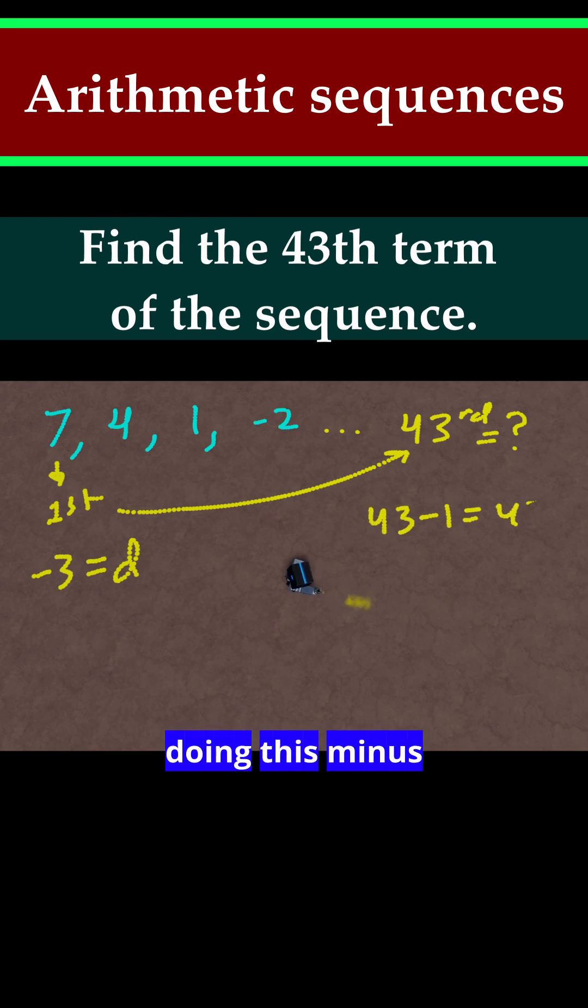So in other words, we're doing this minus 3 forty-two times. And then to find what that total change would be, just do 42 times that we're doing that minus 3. So in other words, 42 times negative 3 tells us how much we change in total. So if you do 42 times negative 3, that is negative 126.